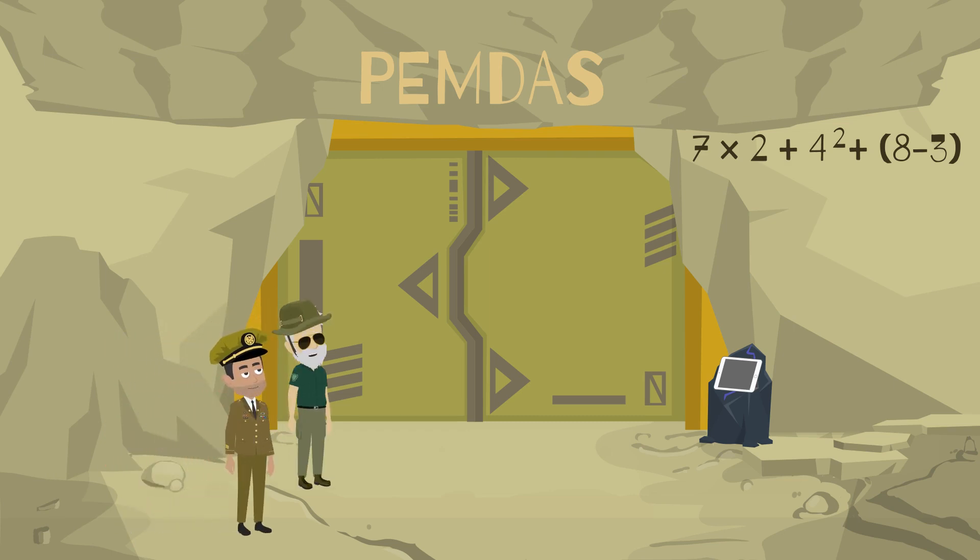What do you think it means? I recognize this. It's the mathematical order of operations. Do you think you can get it open? As long as we follow the correct order, we should be able to get the right answer.